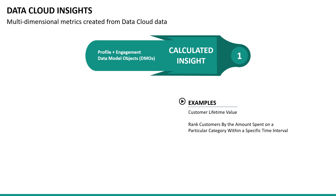Calculated insights is probably the most common of the three. For one thing, calculated insights are frequently used for segmentation and activation. They're built on profile and engagement data model objects, and they're used to create reusable content and perform complex queries on multiple objects. Two examples are customer lifetime value and ranking customers by the amount spent on a particular category within a specific interval.